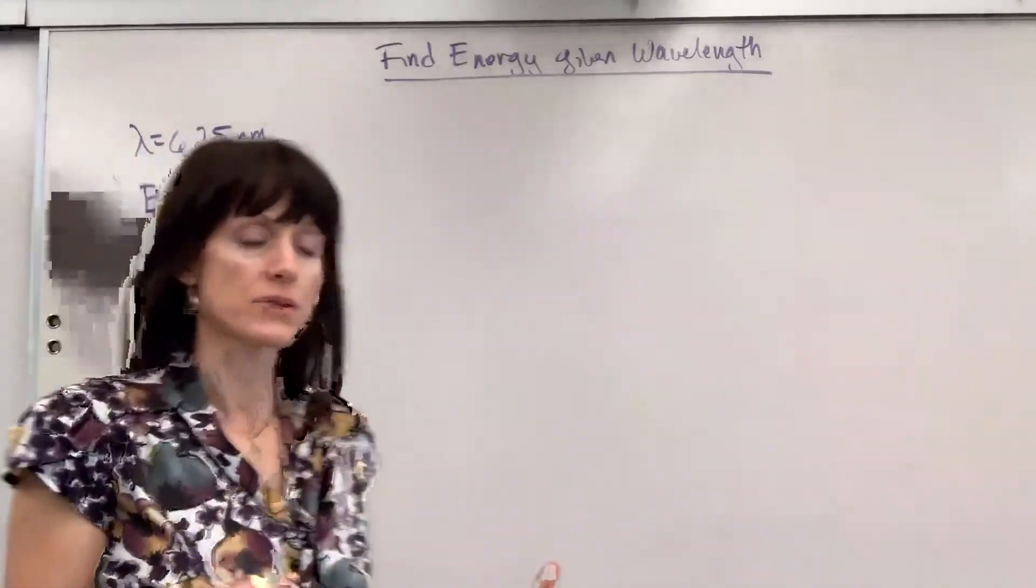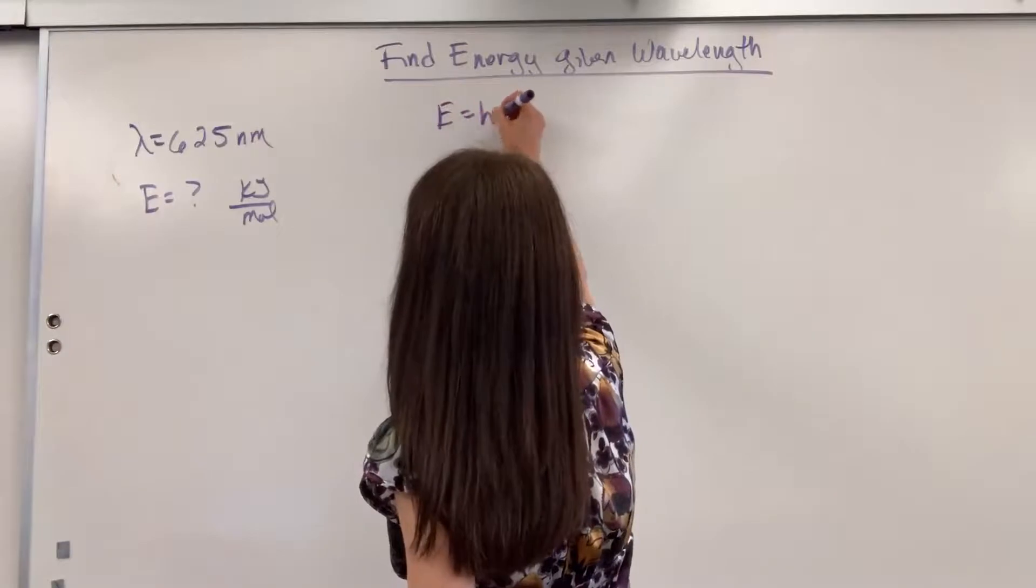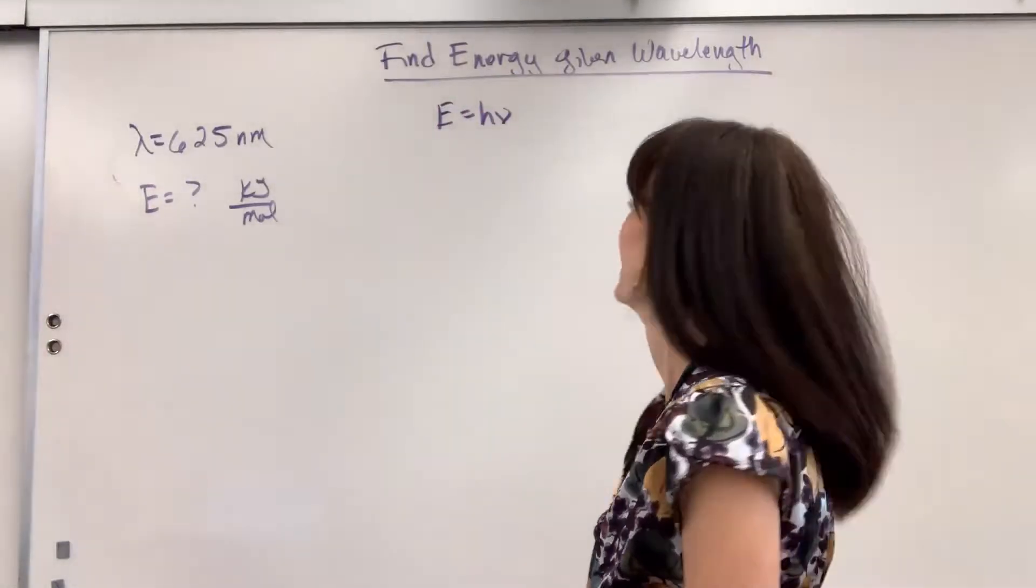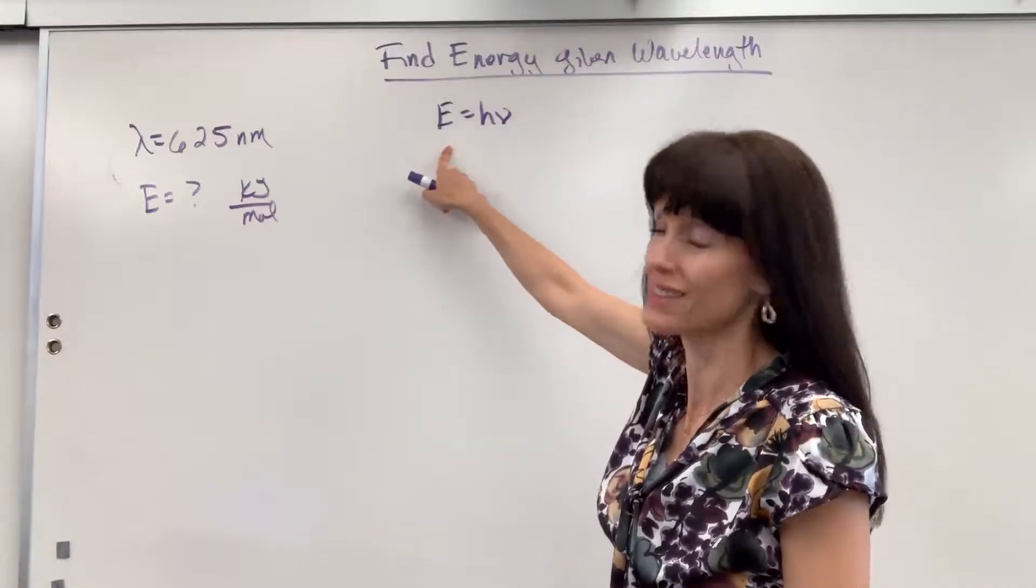They want energy in kilojoules per mole. So from what I know, energy, that formula is E equals H times nu. And that's the only formula that we have for light with energy in it.